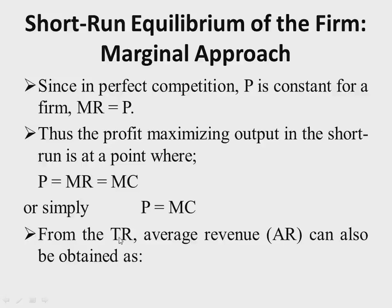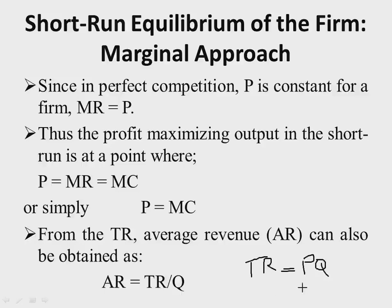From the total revenue function, we can also obtain the average revenue function. Average revenue means total revenue per unit of output produced — total revenue divided by output. Since TR = P × Q, and if price is constant, dividing by quantity gives us average revenue equal to price. Therefore, for a firm in a perfectly competitive market, price = marginal revenue = average revenue.